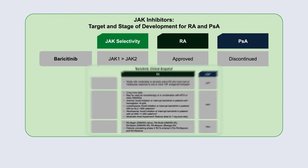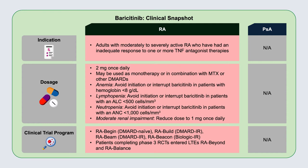Baricitinib, the next drug approved in this space, is only approved in rheumatoid arthritis. It should be noted that it's only approved for patients who have had an inadequate response to one or more TNF antagonist therapies. Its two-milligram dose is fixed. There are a variety of toxicities associated with this, which are really class effects. The clinical development program was extremely robust with several thousand patients, and this drug improved disease activity, signs and symptoms, quality of life, and radiographic progression across the board.